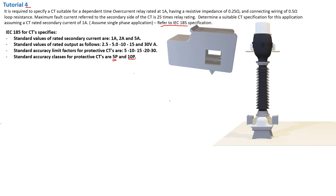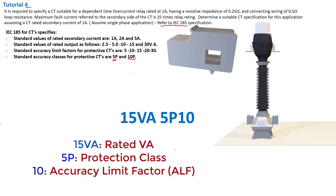At the end of this tutorial, we're going to select a current transformer that looks something like this: 15 VA 5P 10. That basically means 15 VA is the rated burden, 5P is the protection class, and 10 is the number of times that multiplies the rated current before the CT reaches saturation. This is a standard representation of a current transformer.